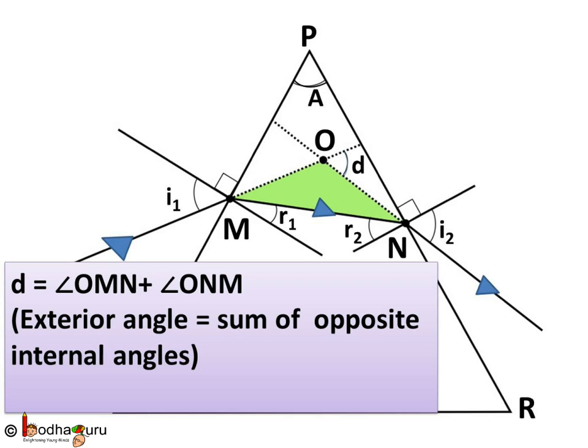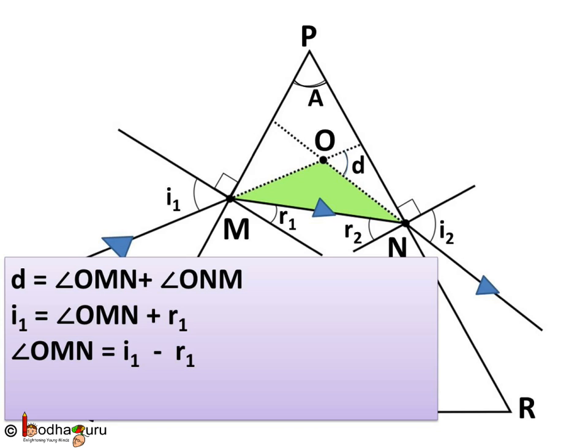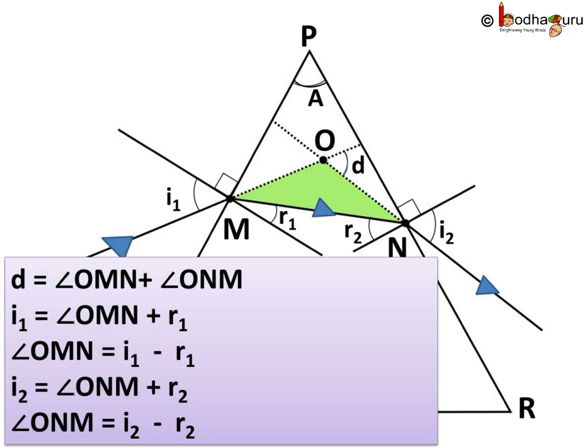Angle D is the exterior angle of the triangle OMN and it is equal to sum of the two opposite internal angles of triangle. So angle D is equal to angle OMN plus angle ONM. Now I1 is equal to angle OMN plus R1 as they form a pair of vertically opposite angles. Thus angle OMN is equal to I1 minus R1. Similarly, the other pair of vertically opposite angles are I2 and angle ONM plus R2. Thus angle ONM is equal to I2 minus R2.